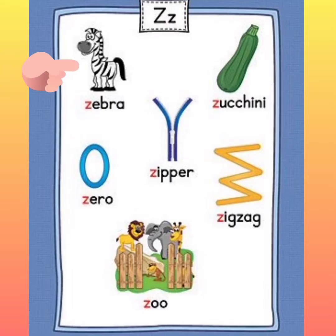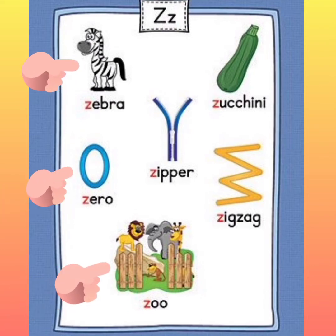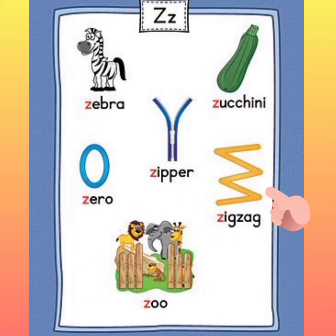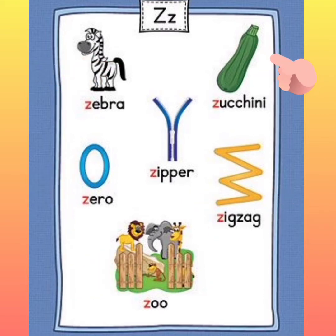Kids: Z for zebra, zero, zoo, zip, zigzag. And it's a vegetable — in Hindi we call it 'tori', in English: zucchini. So these are the Z sound words.